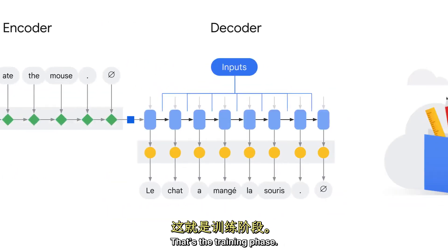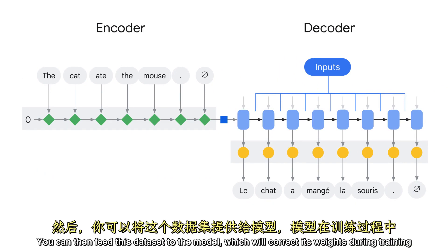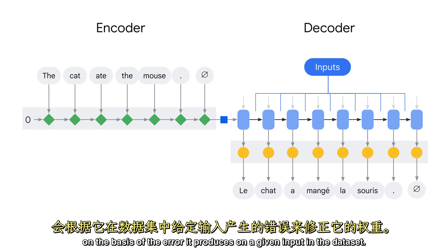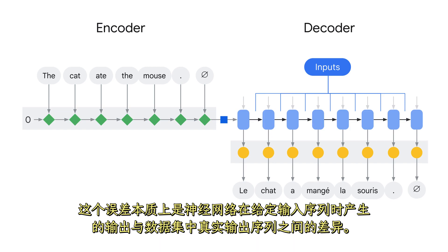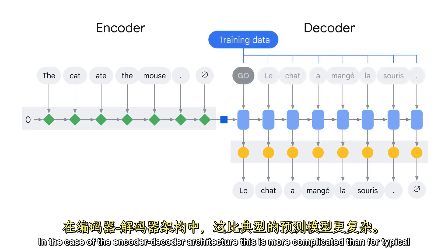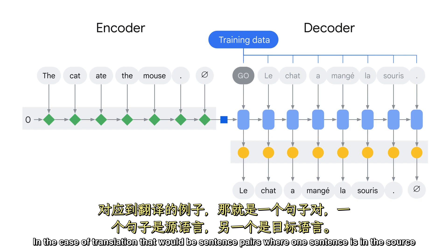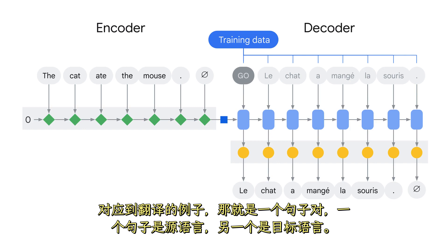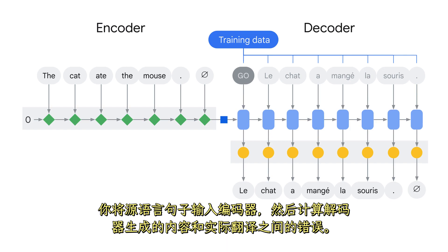That's the training phase. To train a model, you need a dataset that is a collection of input-output pairs that you want your model to imitate. You can then feed that dataset to the model, which will correct its own weights during training on the basis of the error it produces on a given input in the dataset. This error is essentially the difference between what the neural network generates given an input sequence and the true output sequence you have in the dataset. In the case of the encoder-decoder architecture, you need a collection of input and output texts. In the case of translation, that would be sentence pairs where one sentence is in the source language while the other is the translation. You'll feed the source language sentence to the encoder and then compute the error between what the decoder generates and the actual translation.